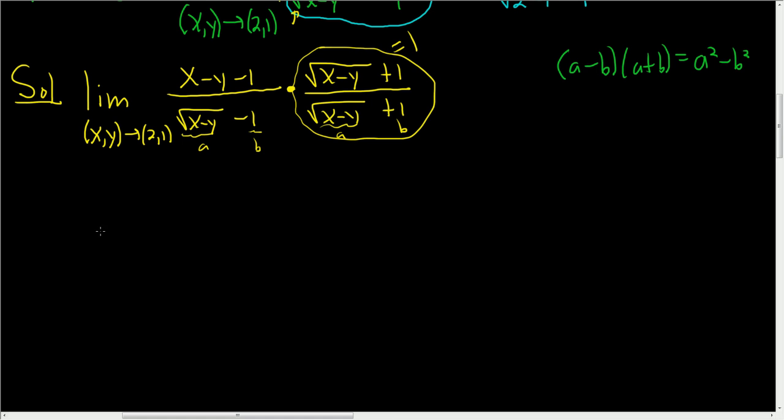Let me switch to a different color. This is the limit as x, y approaches the point 2, 1. Let's be really careful. In the numerator nothing is really going to happen yet. We still have this x minus y minus 1. Then we have this other piece, the square root of x minus y. And then we have the plus 1.